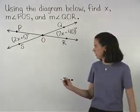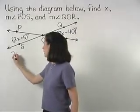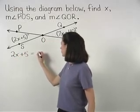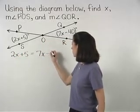we can set up the equation 2x plus 5 equals 7x minus 40.